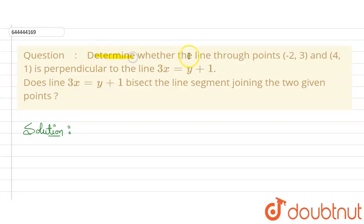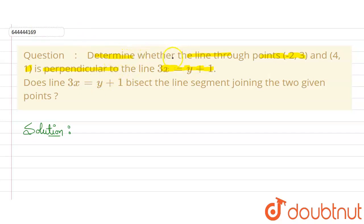In this question, we need to determine whether the line through the points (-2, 3) and (4, 1) is perpendicular to the line 3x = y + 1. This is the first part of the question; let's solve this part first, then we'll move to the next part.